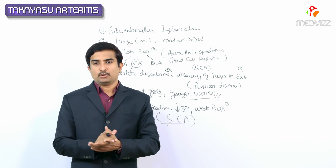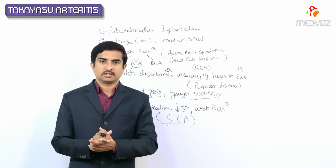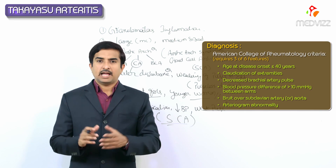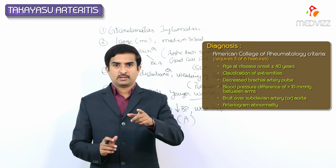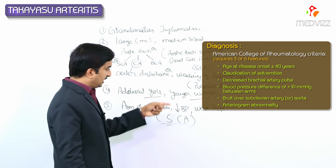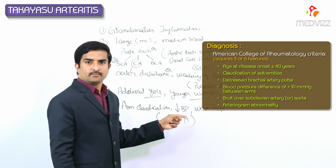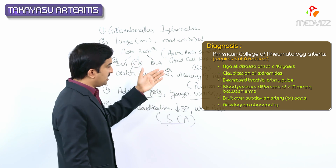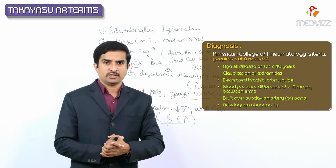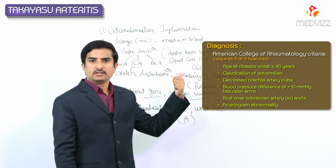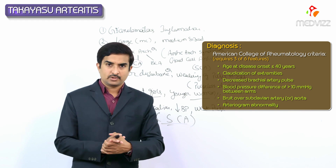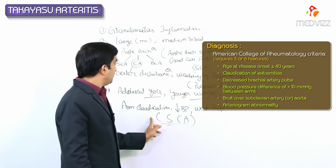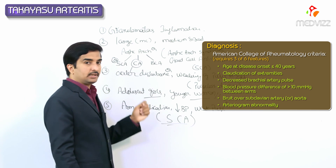For diagnosis, the American College of Rheumatology requires three out of six criteria to be satisfied. The six criteria include: age at onset less than or equal to 40 years, and claudication of the extremities — which must be present due to involvement of the subclavian artery, the most common artery involved in Takayasu arteritis.